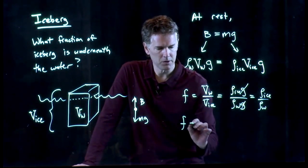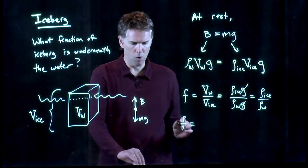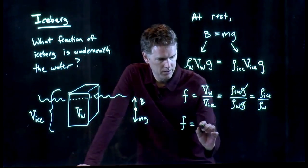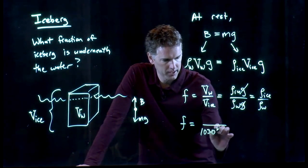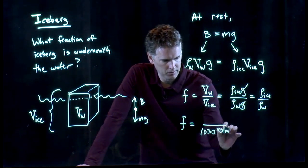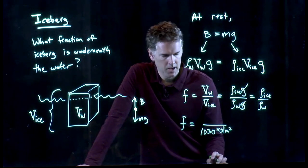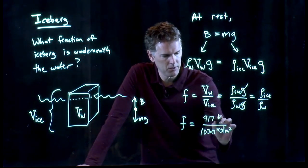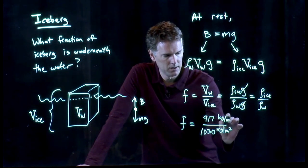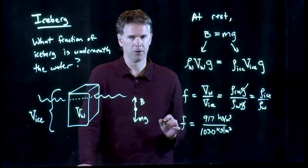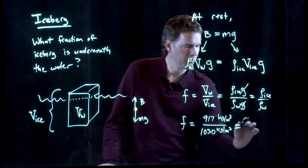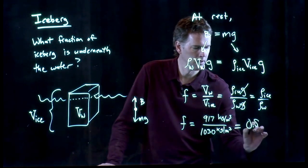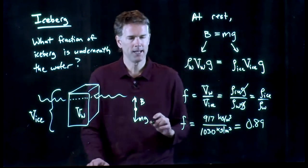And those things you can look up. For cold seawater, the density of the water is about 1,030 kilograms per cubic meter. And the density of ice is 917 kilograms per cubic meter. And those numbers are pretty close to each other. And so this fraction is 0.89. 89%.